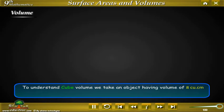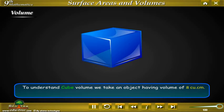To understand cube volume, we take an object having volume of 8 cm³. That is 2 cm into 2 cm into 2 cm, and it is equal to 8 cm³.